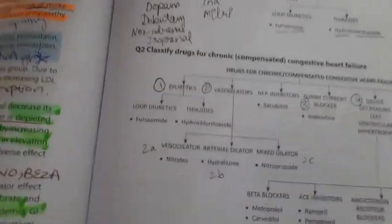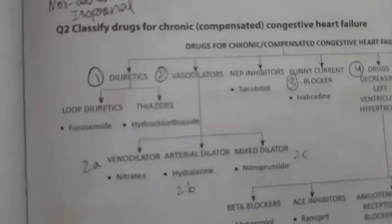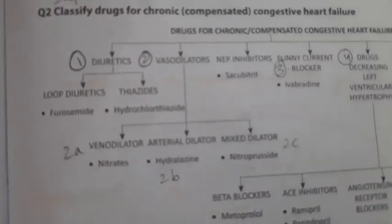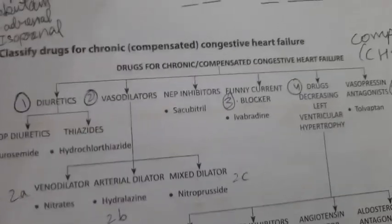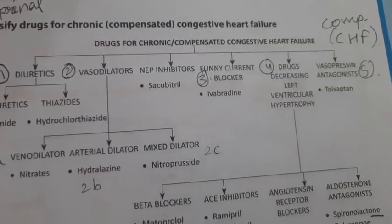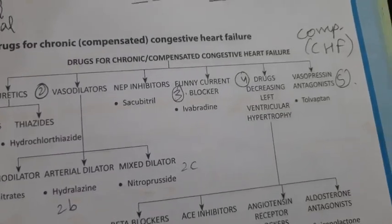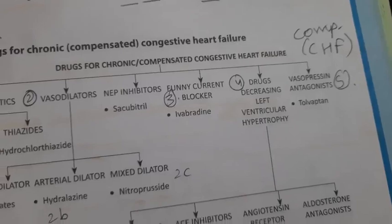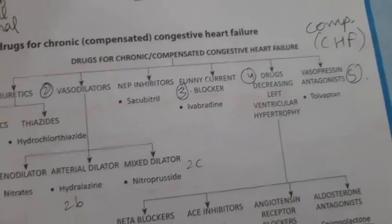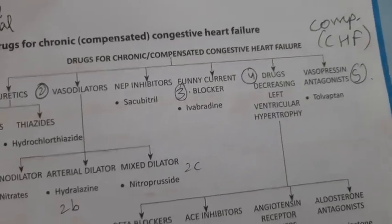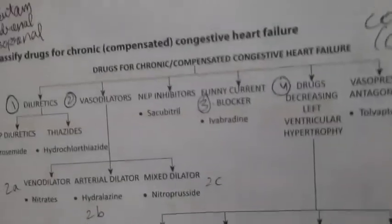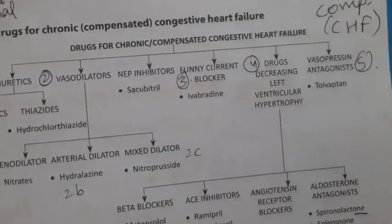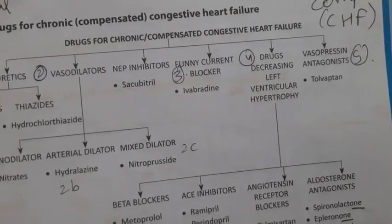Firstly, there are diuretics, then vasodilators, then NEP inhibitors, then funny current blockers, then drugs decreasing left ventricular hypertrophy, and then vasopressin antagonists.